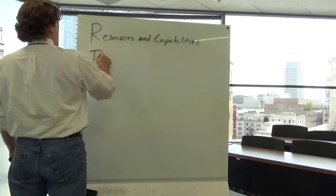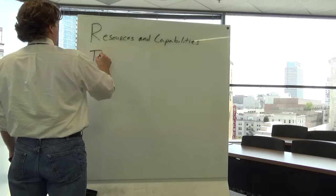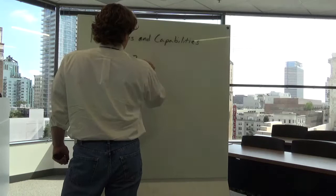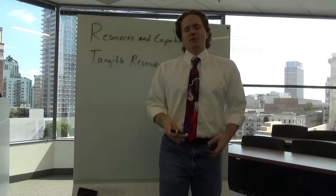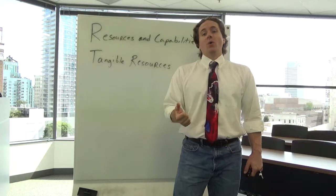So some different kinds of resources that we have. The first is tangible resources. Tangible resources are typically known as financial or physical resources, things that you can actually touch. Financial, of course, in theory you can touch the money, right?